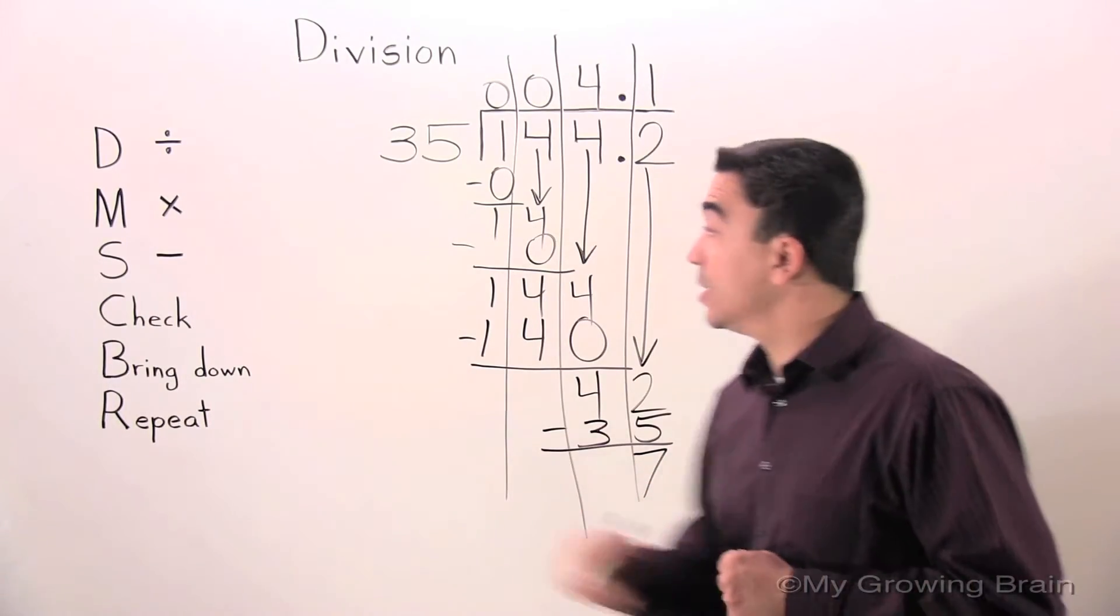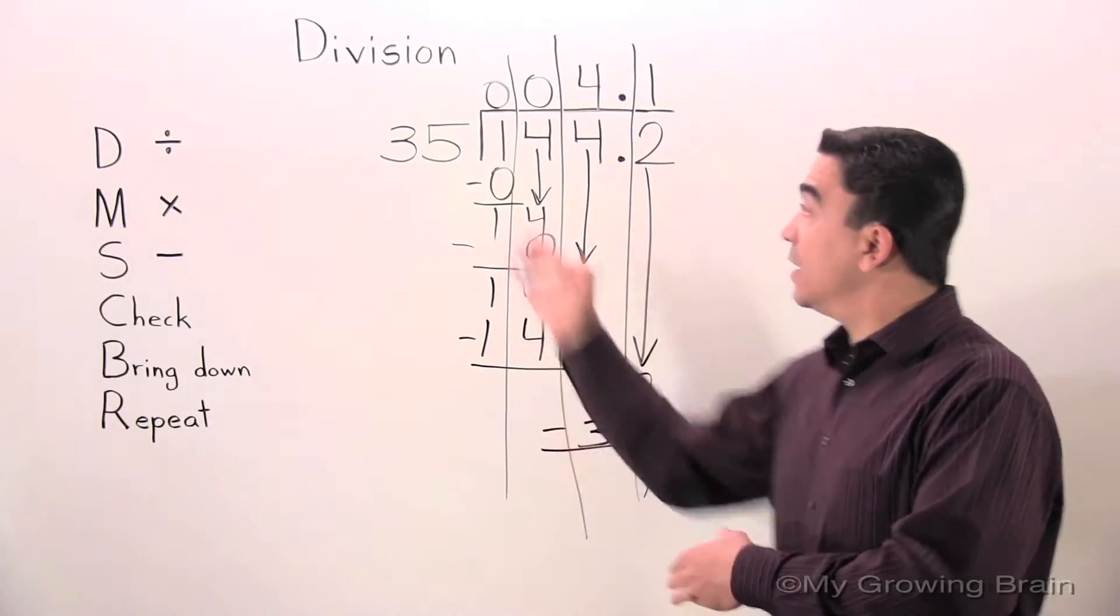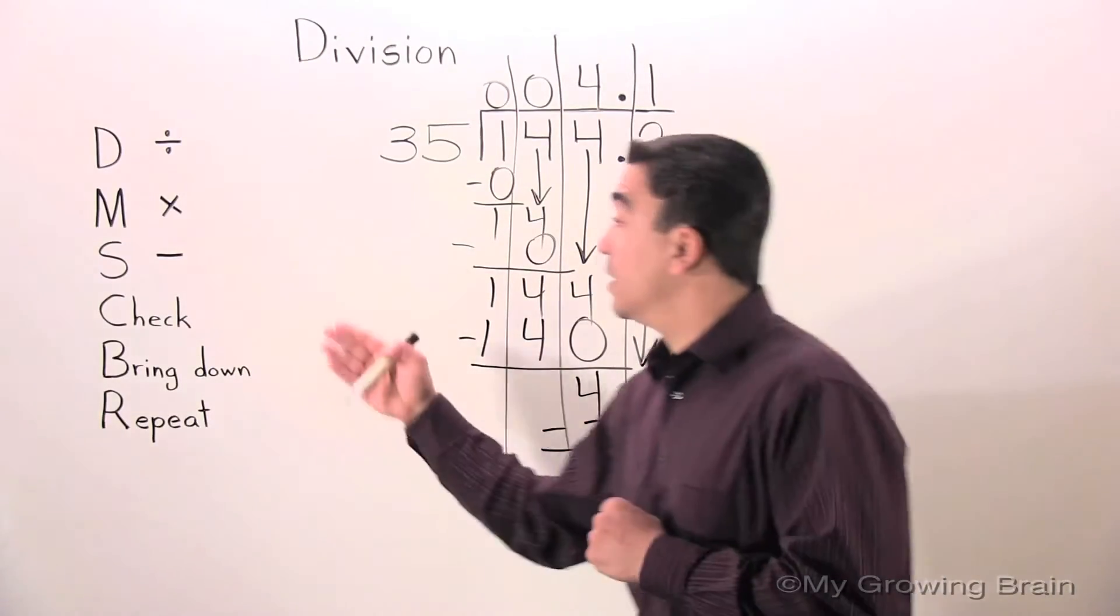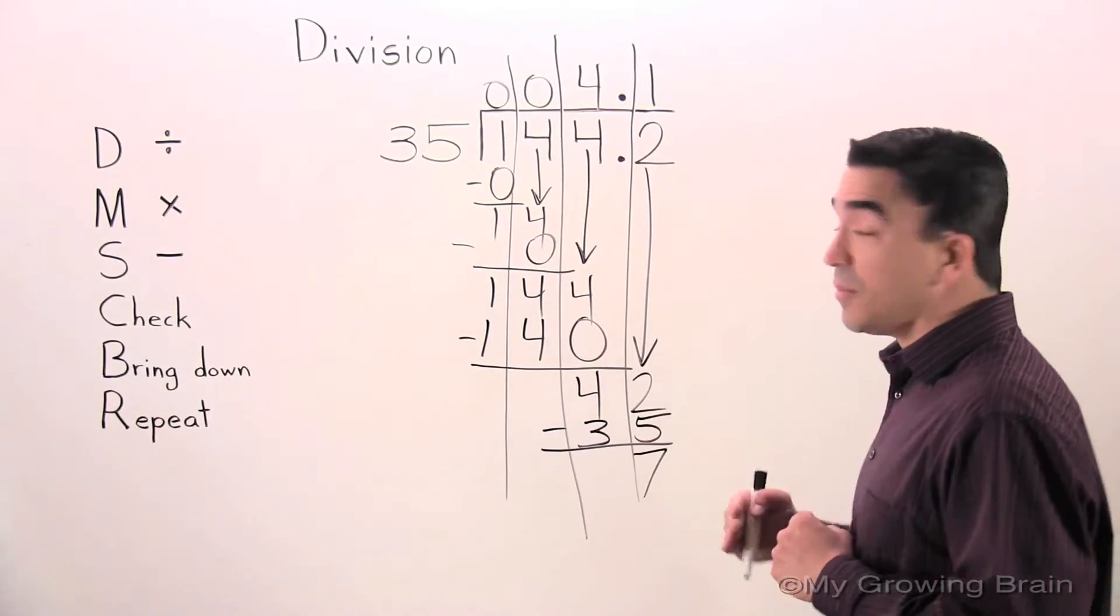Next step: check. 7 is less than 35, keep on going. Next step: bring down. There's nothing to bring down.